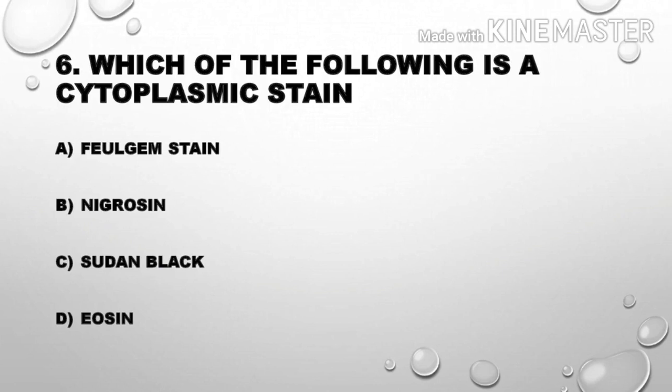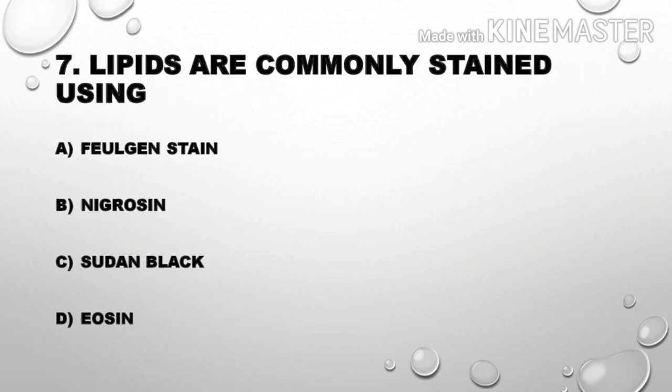Next question: Which of the following is a cytoplasmic stain? Options: flagella stain, nigrosin, Sudan Black, eosin. The correct answer is eosin — eosin is a cytoplasmic stain. Additionally, lipids are commonly stained using Sudan Black.